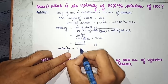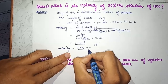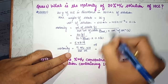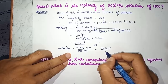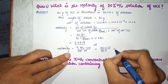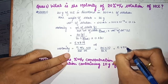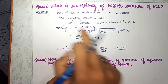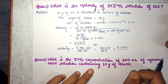Alternatively, you can directly use the formula: molarity equals percentage weight by volume multiplied by 10, divided by molecular weight. So 20 multiplied by 10, divided by 36.5, gives the same answer of 5.47 molar. You can use either formula for this type of question.